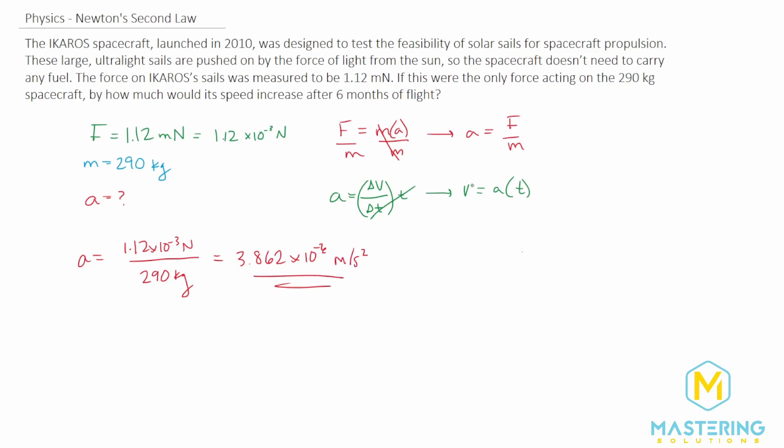So now before we can plug this into the acceleration formula, we need to change 6 months to the standard unit for time, of course seconds. So what we'll do is write this as half of a year. In one year, we have 365.25 days, in one day, there's 24 hours, and in one hour, we have 3,600 seconds.